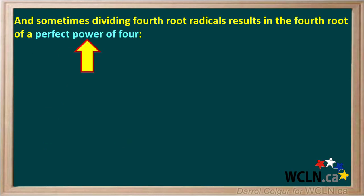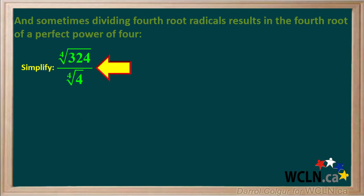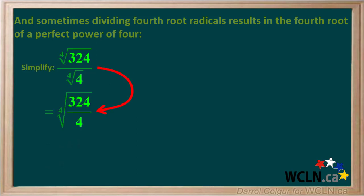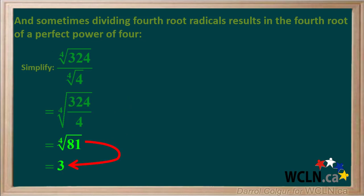And sometimes dividing fourth root radicals results in the fourth root of a perfect power of 4. For example, we are asked to simplify the fourth root of 324 divided by the fourth root of 4. The fourth root of 324 divided by the fourth root of 4 equals the fourth root of 324 divided by 4. 324 divided by 4 equals 81, and the fourth root of 81 equals 3.